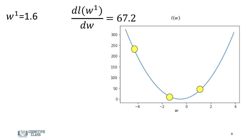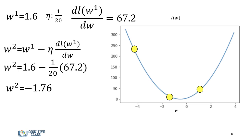For the next iteration, we'll use a previous parameter estimate of 1.6. We'll use the same learning rate. We update the parameter value. The parameter value for the second iteration is negative 1.76. And you can see by the plot that the loss value for the second iteration is smaller than the loss value for the first iteration.